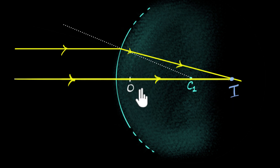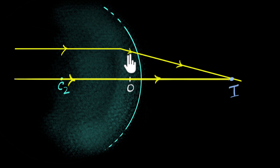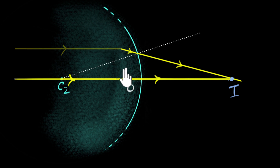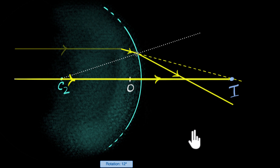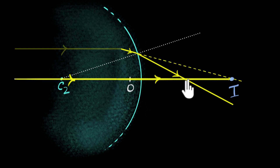This is the image if the second surface were not there. Now let's consider the second surface. For the second surface, the ray is now going from the denser medium to a rarer medium, so it bends away from the normal. As a result, the initial two parallel rays are focused after refraction at a final point — our principal focus. The distance from the lens to this principal focus is the focal length, and that's what we have to figure out.